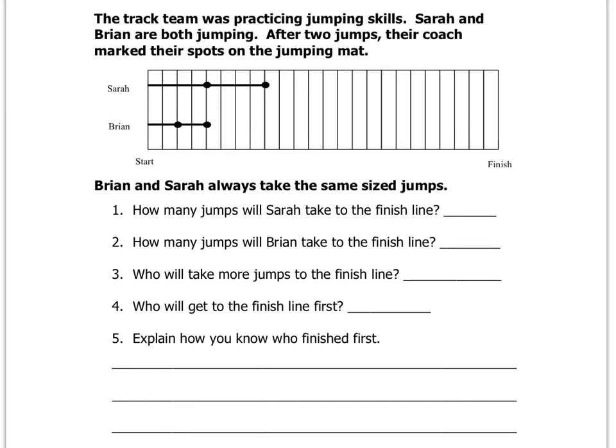Then you want to figure out here who will take more jumps to the finish line. So that should be pretty obvious, whoever's jumps are shorter. Who will get to the finish line first? That would be probably the person that has to take the least amount of jumps. And then I want you to explain how you know who would finish first. So you need to write in English sentences how you know who would finish first.